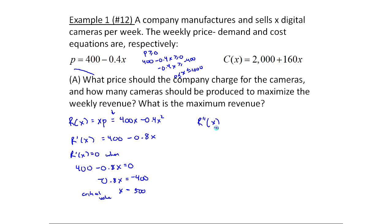Well, r double prime of x is zero, right? Because the derivative of 400 is zero, and then it'd be minus 0.8, which is obviously less than zero. No matter what you plug into here, you're going to end up with minus 0.8. So it's less than zero for all x. So that includes x equals 500, right?